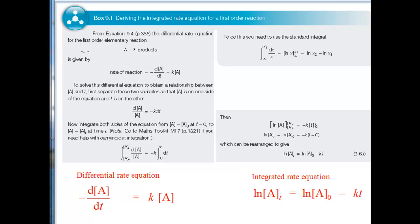For the elementary reaction A going to products, the differential rate equation shows how the rate of reaction — that is, the rate of change of the concentration of A — depends on the concentration of A. It's called a differential equation because the rate of change is expressed as a differential. The minus sign is there because the concentration of a reactant decreases with time. The reaction is first order, so the rate of reaction is proportional to the concentration of A. K is the rate constant for the reaction.